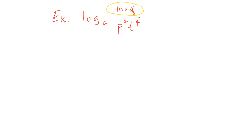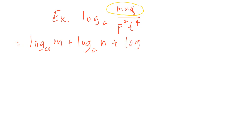Applying the product rule means addition, so our answer for the numerator would be: log base a of m plus log base a of n plus log base a of q.